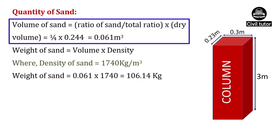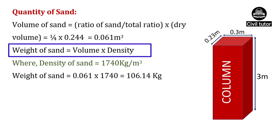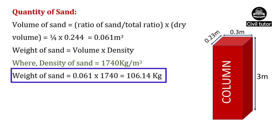Volume of sand equals ratio of sand upon total ratio into dry volume. Ratio of sand is 1, total ratio is 4, and dry volume is 0.244. Substituting, volume of sand equals 0.061 meter cube. Weight of sand equals volume into density, where density is 1,740 kg per meter cube, giving a weight of sand of 106.14 kg.